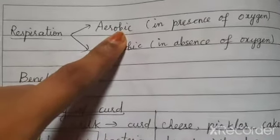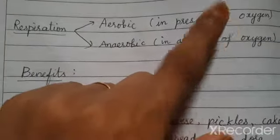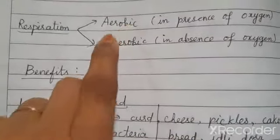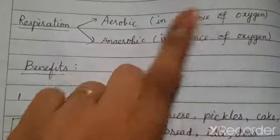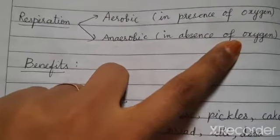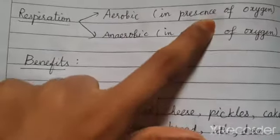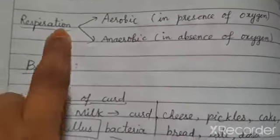Regarding respiration of microbes: aerobic respiration means the organism needs oxygen to survive — like us, we are all aerobic. Anaerobic means the opposite — living in the absence of oxygen. Anaerobic microorganisms die when they come into contact with oxygen or air.